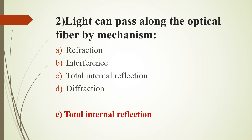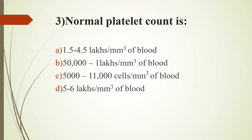Third question. Normal platelet count is: Option A, 1.5–4.5 lakhs per mm³ of blood; Option B, 50,000–1 lakh per mm³ of blood; Option C, 5,000–11,000 cells per mm³ of blood; Option D, 5–6 lakhs per mm³ of blood. Answer is Option A, 1.5–4.5 lakhs per mm³ of blood.